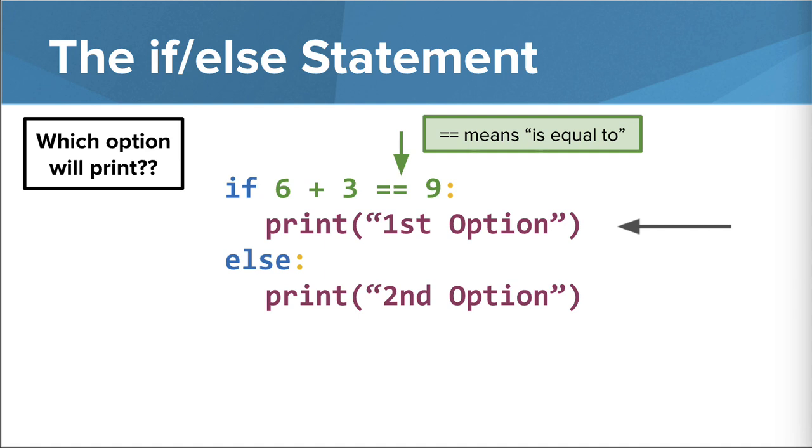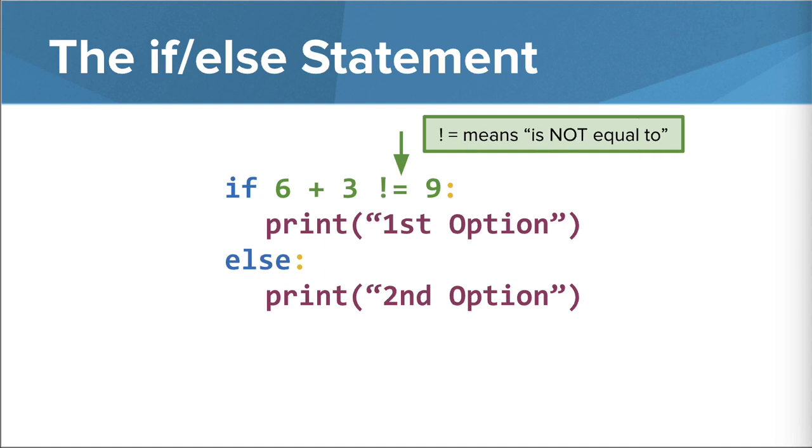Let's change the first condition here. Whenever you see an exclamation mark and an equal sign, this means it's not equal to. Now the first statement says, if 6 plus 3 is not equal to 9, this is false since 6 plus 3 equals 9. So we go to the else statement and print second option.